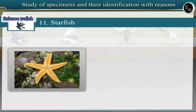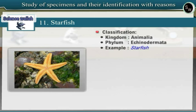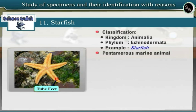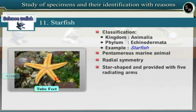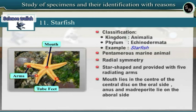Specimen 11: Starfish. Observe the specimen of starfish. Starfish belongs to phylum Echinodermata in Kingdom Animalia. The body has pentamerous symmetry and calcareous spines, with presence of tube feet, therefore starfish is included in phylum Echinodermata. Starfish is a free-living, pentamerous marine animal showing radial symmetry. The body is star-shaped and provided with five radiating arms. The mouth lies in the center of the central disc on the oral side, while the anus and madreporite lie on the aboral side. Locomotion is by tube feet.